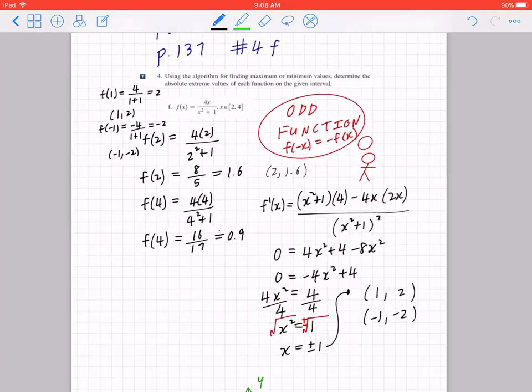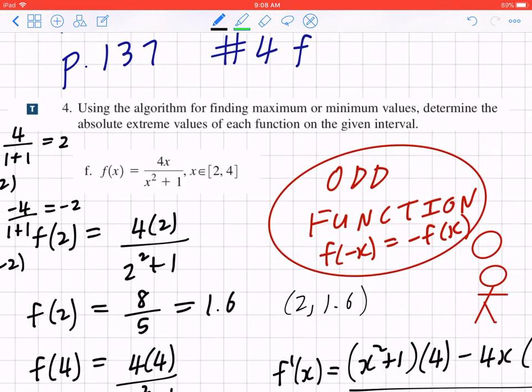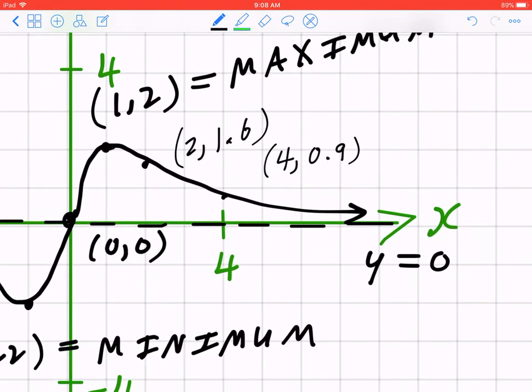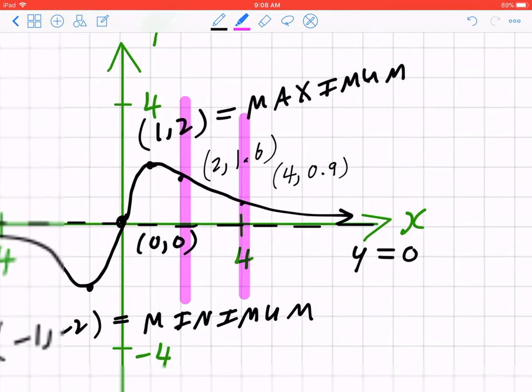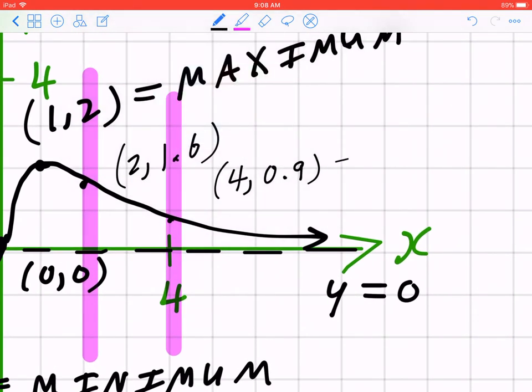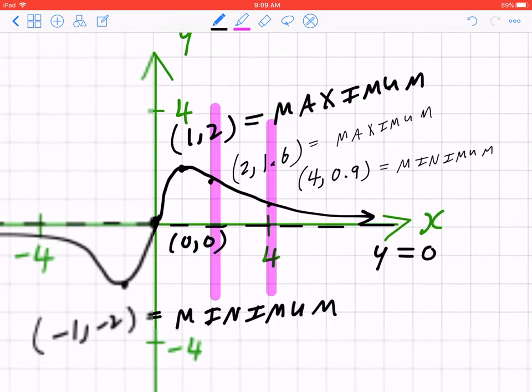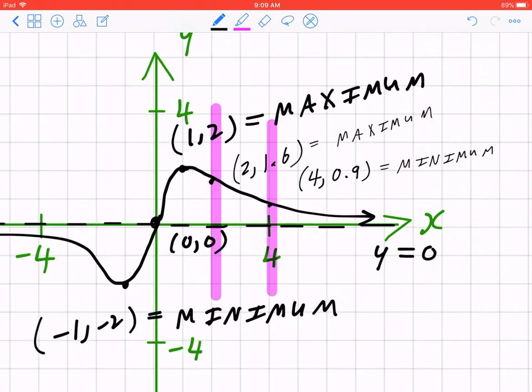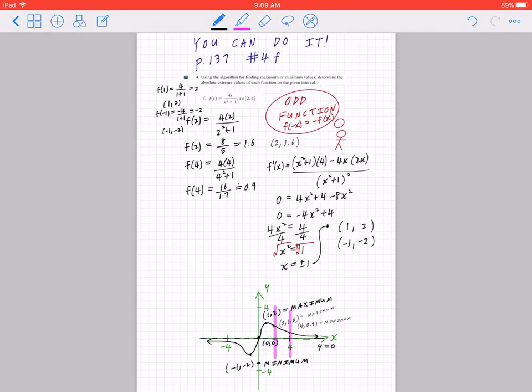Now if all you're answering is what they're asking, which is find the absolute extreme values of each function given, because your domain is only from 2 to 4, then you can say the final answers are minimum at 4, 0.9, and a maximum of 2, 1.6. However, if you look at the big picture, you should recognize the absolute maximum is at 1, 2, and the absolute minimum is at negative 1, negative 2. I hope this makes sense.